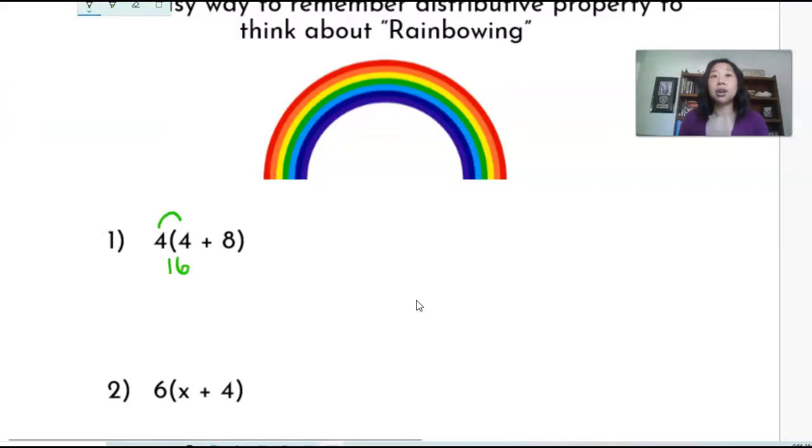And then the next rainbow is we're going four times eight, which is four times positive eight, which is going to be positive 32. And that is going to get me 16 plus 32. So that's going to get me 48.